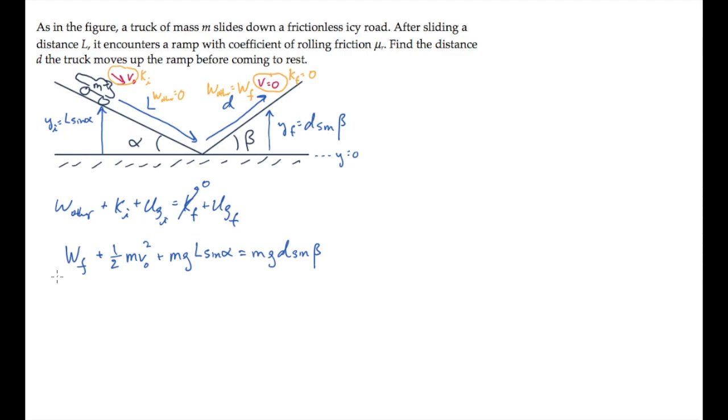Now we could solve for the distance d that the truck travels up the ramp if we knew how much work friction did. So we need to go off to the side and find that. The work done by any constant force is the magnitude of the force times the magnitude of the displacement times cosine of the angle between those two vectors.